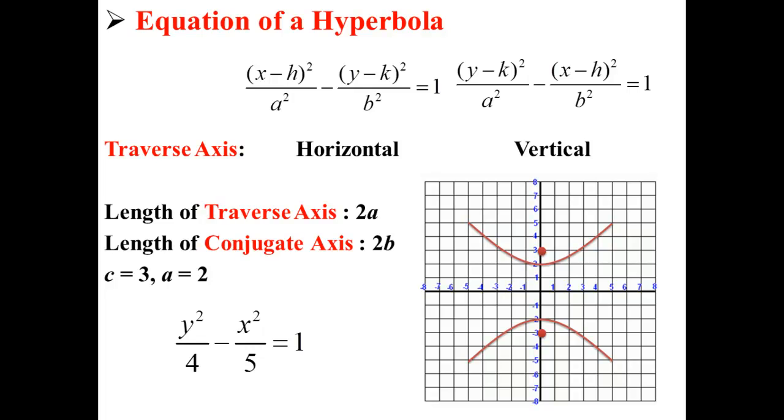In its standard form, the equation for a hyperbola with a traverse axis includes the center point. So we actually have (x - h) squared over a squared minus (y - k) squared divided by b squared equals one for the horizontal traverse axis. And for the vertical traverse axis, we have (y - k) squared divided by a squared minus (x - h) squared divided by b squared is equal to 1.